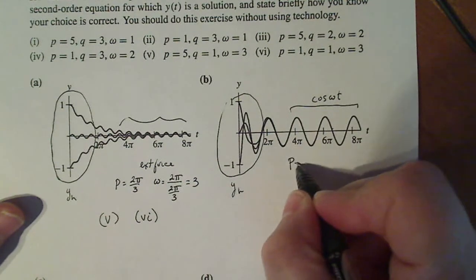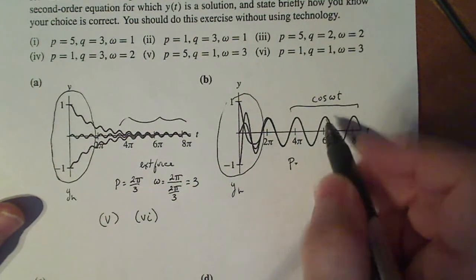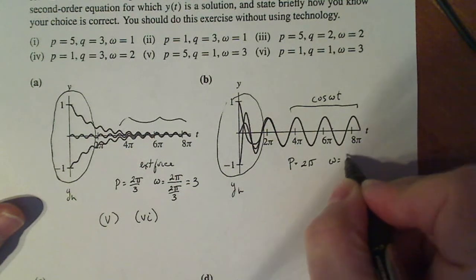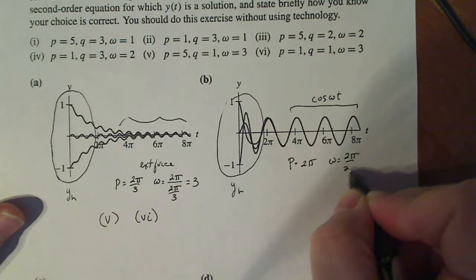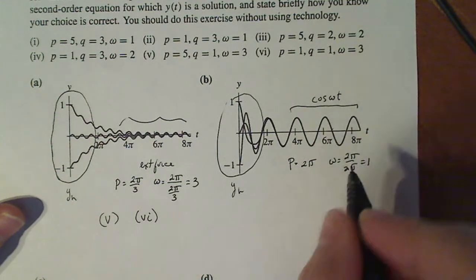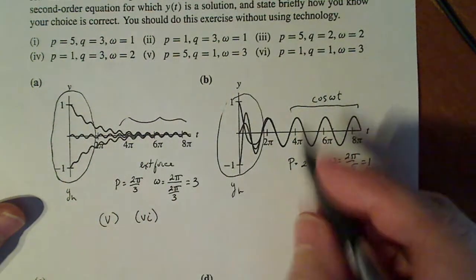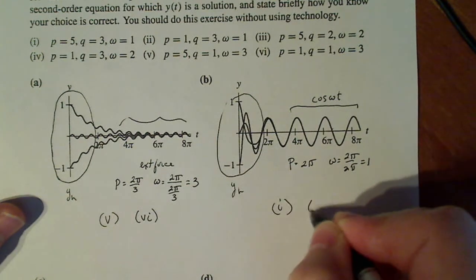Here my period, I have one wave over 2π. That means that omega is equal to 2π divided by 2π, which is one. So that narrows down my choices to one and two.